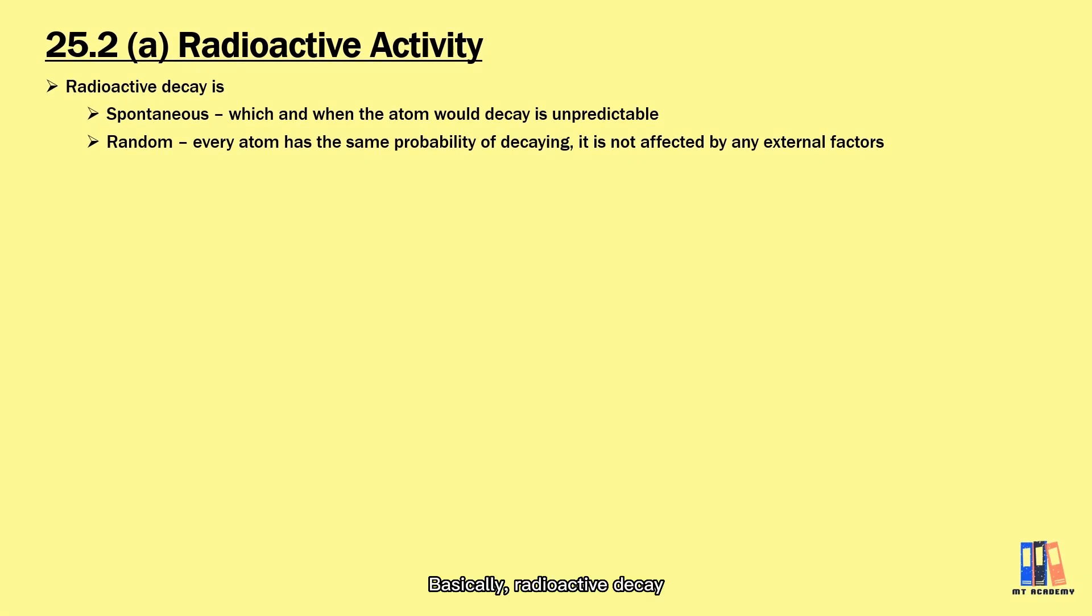Basically, radioactive decay is a process where unstable nucleus becomes more stable by emitting radioactive radiation, which could be alpha particle, beta particle, or gamma ray, which you have learned in SPM physics.